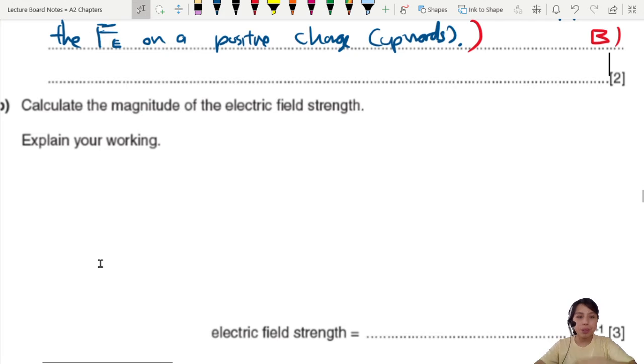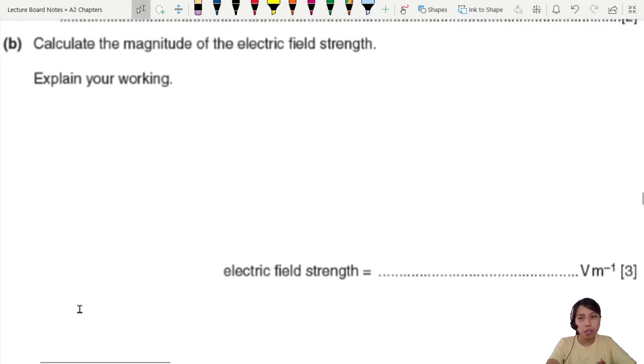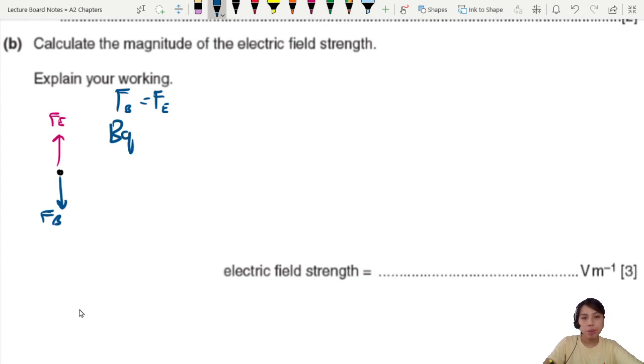Next, calculate the magnitude of the electric field strength. When you see magnetic and electric field together, you got to think of the equilibrium kind of idea already. You have a particle where you have a magnetic force downwards but also an electric force upwards, and they are equal in magnitude. That's why the particle is undeviated, no deflection. So magnetic force equals electric force.